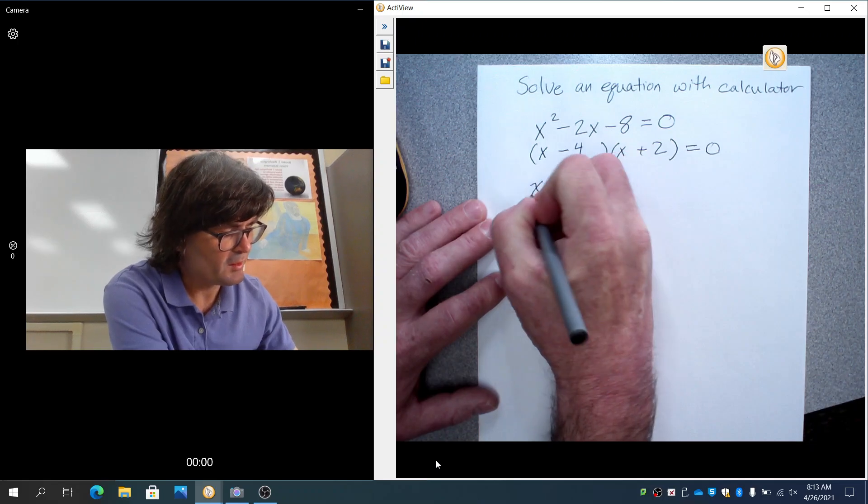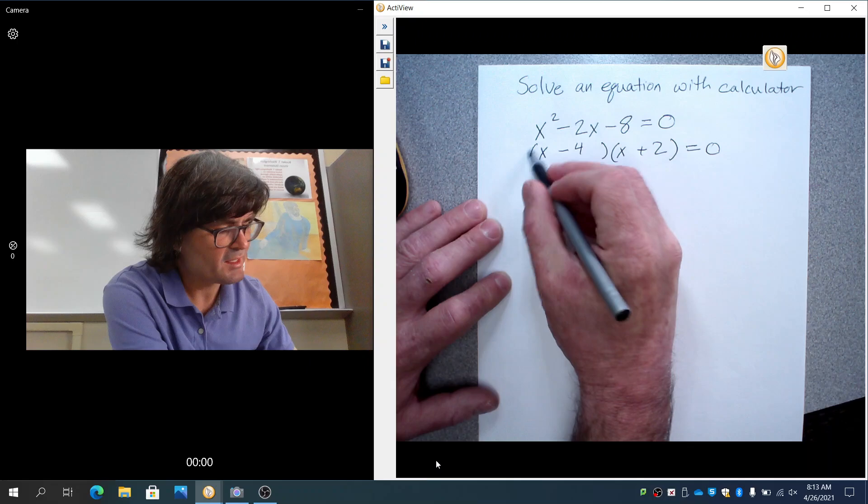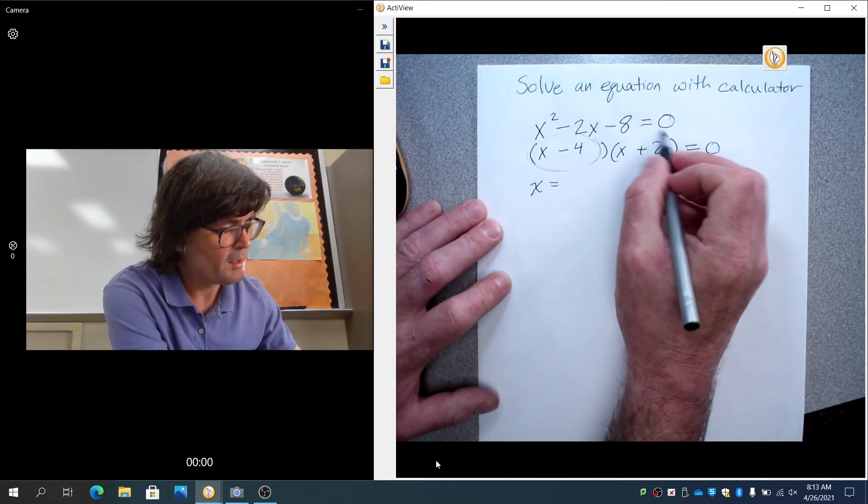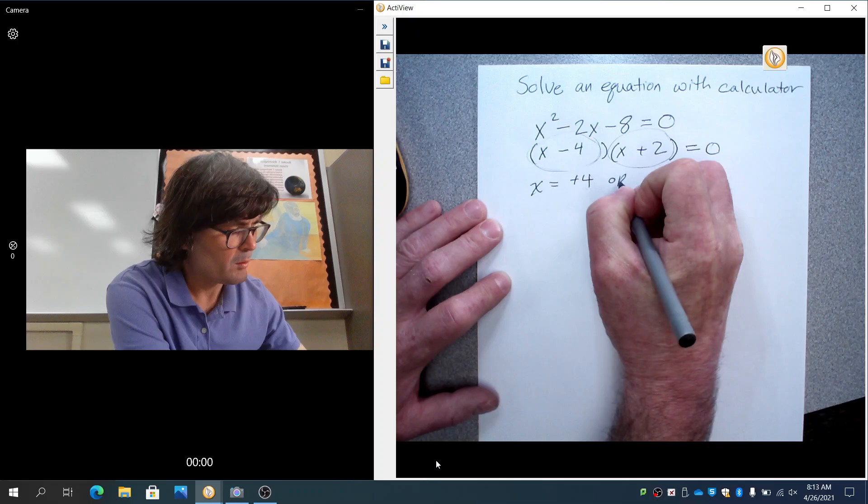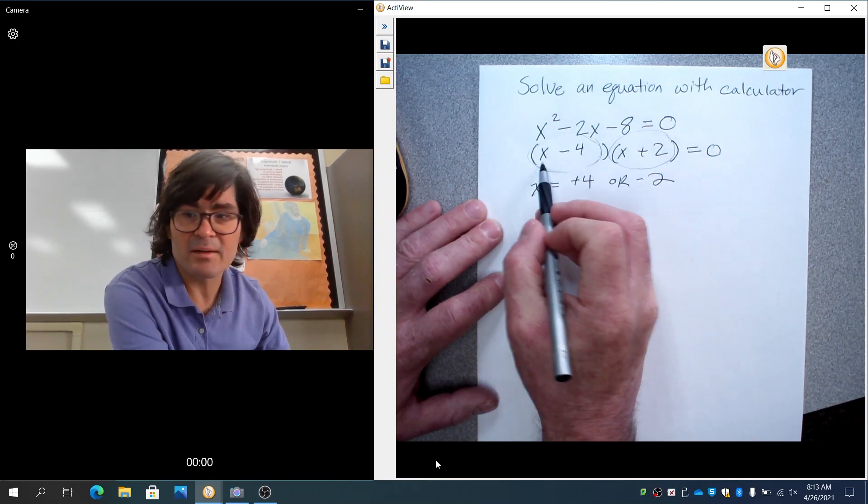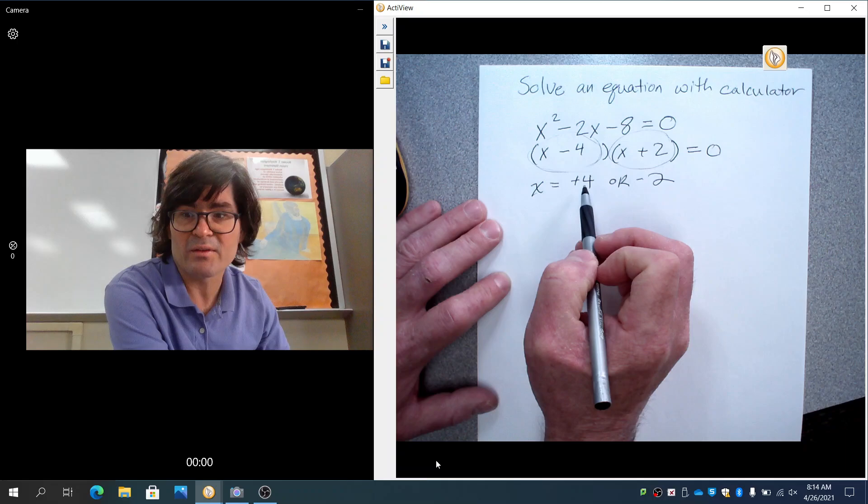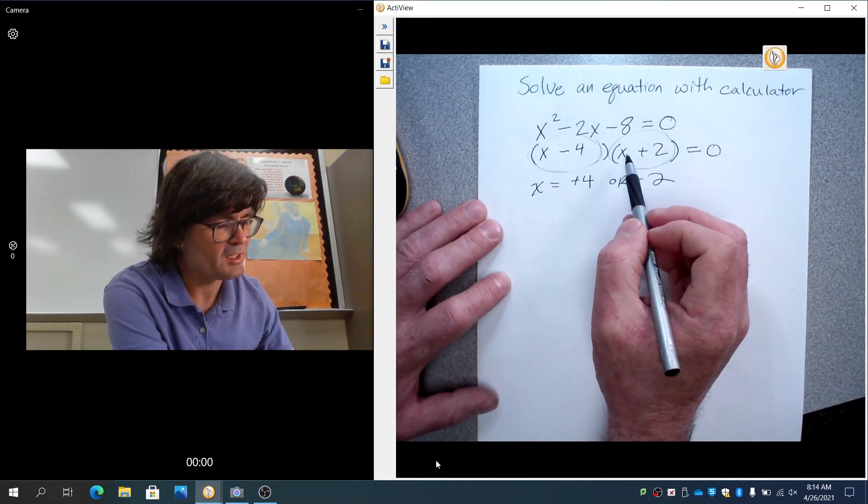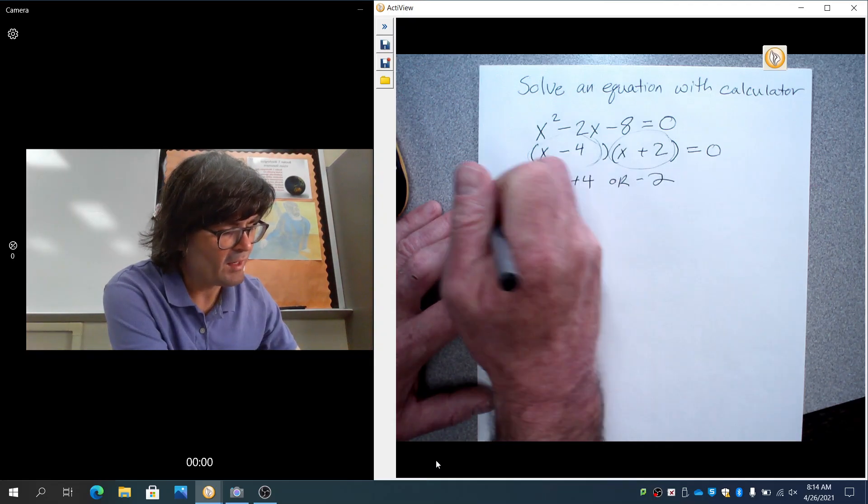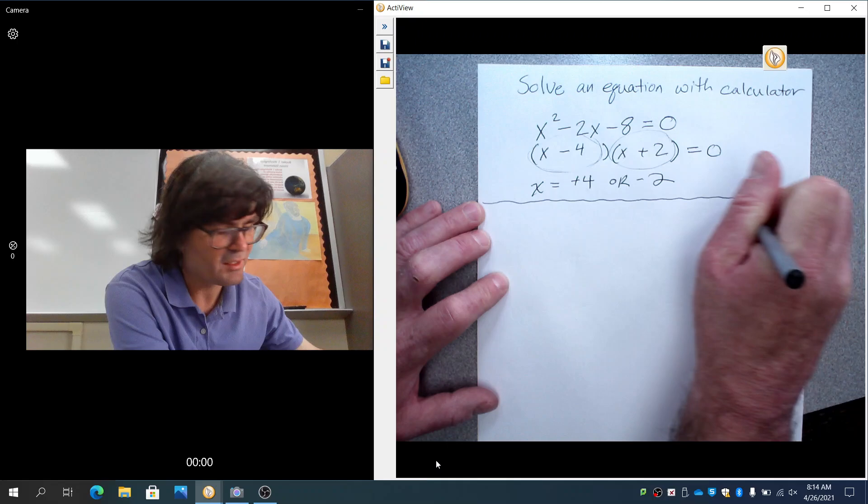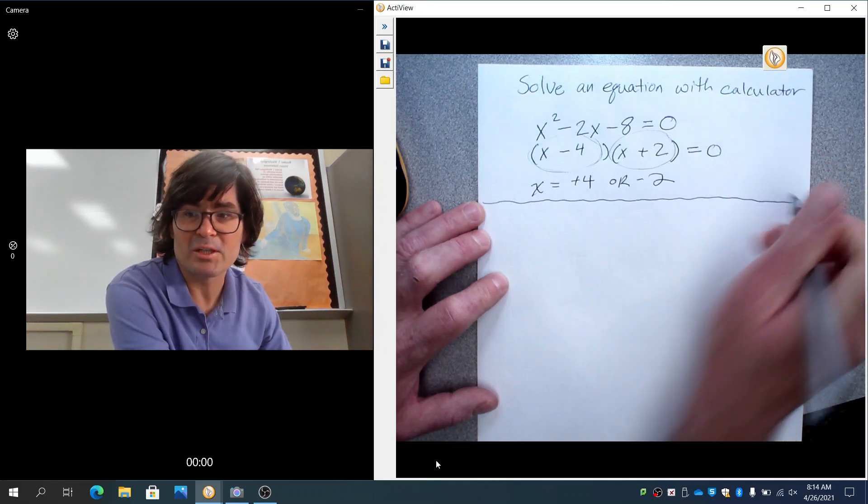So here your x would equal, you'd ask what makes this equal to 0 and what makes this equal to 0, positive 4 or negative 2 because you'd set x minus 4 equal to 0 and 4 would be the solution for that. Also, x plus 2 would be set equal to 0. The negative 2 would be the solution to that. In fact, I've got a different video about that, so I don't want to focus on that too much here.